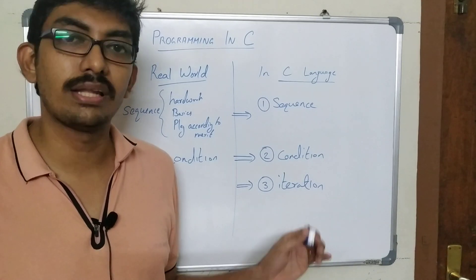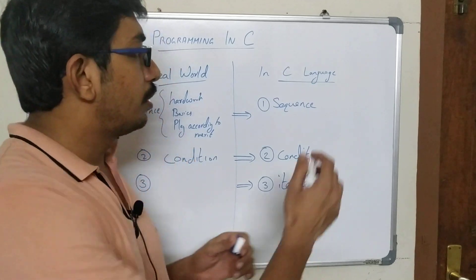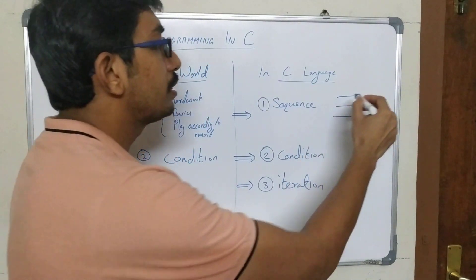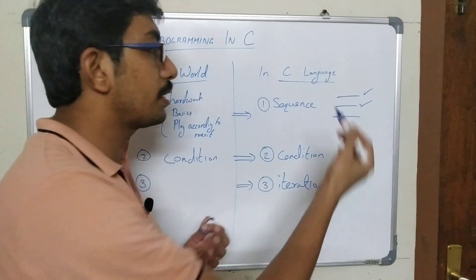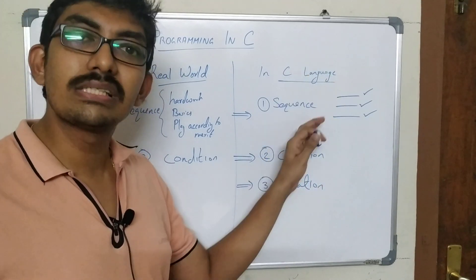In C language, if you are writing three statements, the order of execution will be the first line will be executed first, the second line will be executed second, and third will be executed third. So already there is a sequence and it works in a sequential manner.